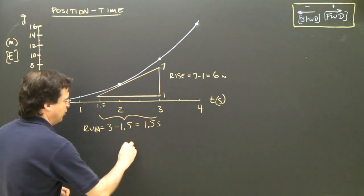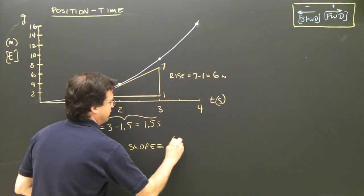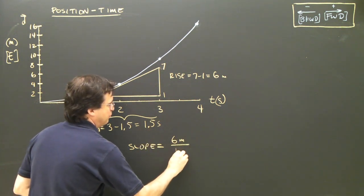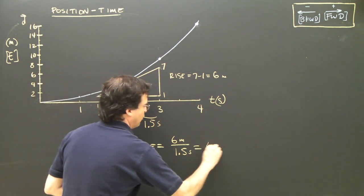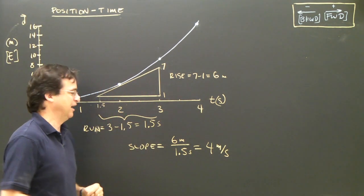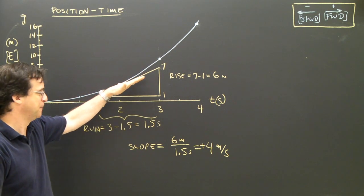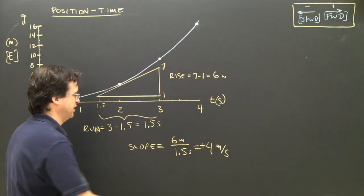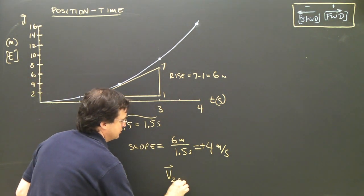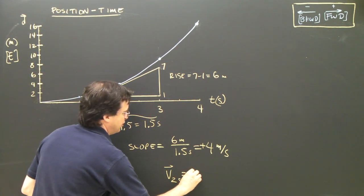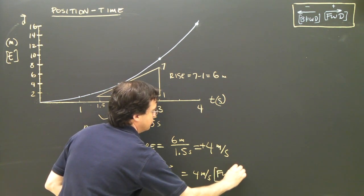So to find the slope, the slope is rise over run. 6 meters divided by 1.5 seconds is 4 meters per second. And it's going to be positive because the slope is in the positive direction. So the velocity at 2 seconds is equal to 4 meters per second forward.